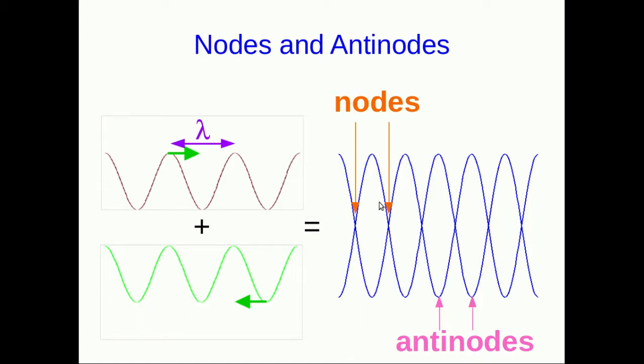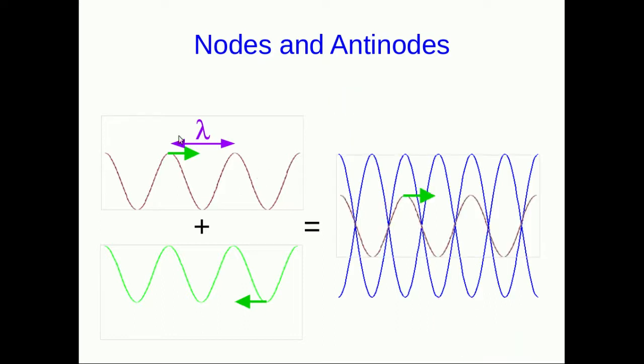Something to notice about the nodes and antinodes is their spacing. If you superimpose one of the waves that makes up this standing wave and look at its wavelength, you can see that one wavelength carries you the distance between not the next antinode from where you start, but the one after that. So the distance between antinodes is half of the wavelength. Similarly, the distance between adjacent nodes is also half a wavelength.